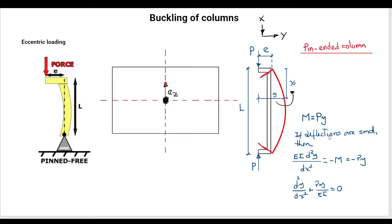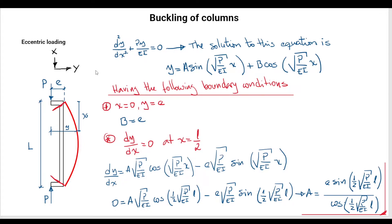If we consider that the deflections are small, as we did in the earlier case, then we can apply the deformation formula. When I substitute the value of the moment into this formula, I find a second-degree differential equation that has the same shape as the one we had in the Euler case. The solution to this differential equation has the same form, and the next task is to find the values of the constants A and B from the integration process.